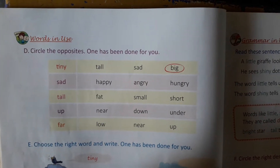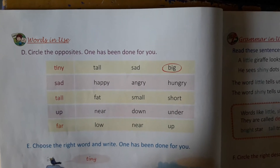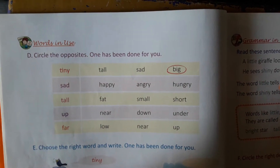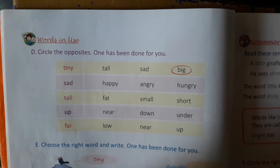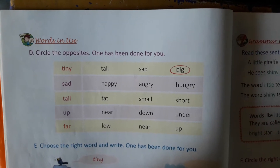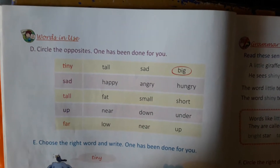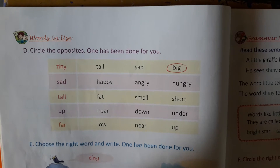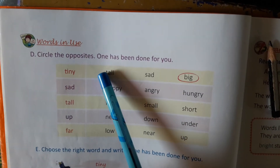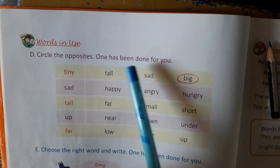Good morning students. Today we will do exercise D of chapter 3, The Little Giraffe. All of you open your book, page number 30. Exercise D — circle the opposites. One has been done for you.